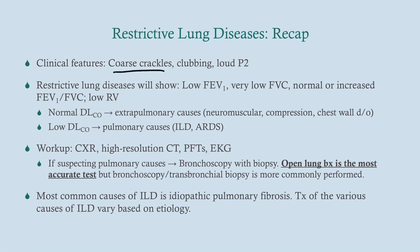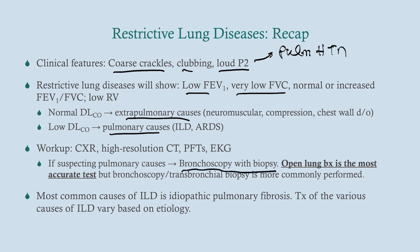Clinical features of restrictive lung disease include coarse crackles, clubbing, and a loud P2, which suggests pulmonary hypertension in late stage — something also seen with COPD. To summarize: low FEV1, very low FVC, and all-around reduced volumes, but patients are fairly well-off at emptying their lungs. Normal DLCO suggests extra-pulmonary causes; low DLCO suggests pulmonary causes. Workup is chest x-ray, high-res CT, PFTs, and EKG. If suspecting pulmonary causes, next step is bronchoscopy with biopsy, but open lung biopsy is the most accurate test.